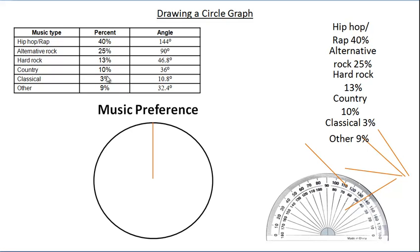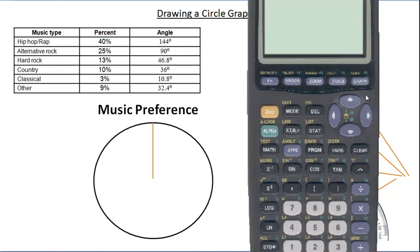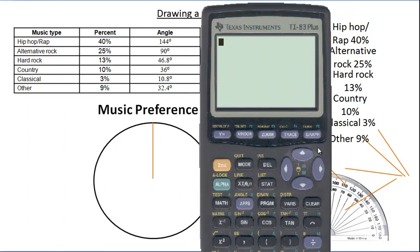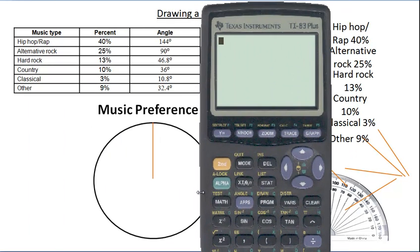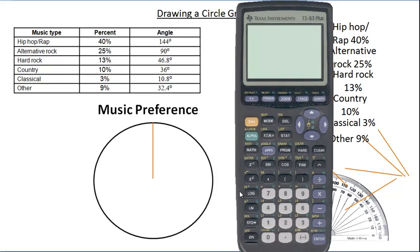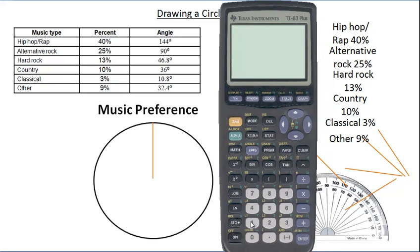Once you have the percentages for each category, as a check these should add up to 100 or very close to 100. Let me bring my calculator over and make it a little smaller so it'll fit in the entire screen.